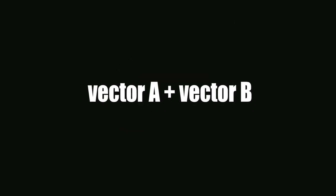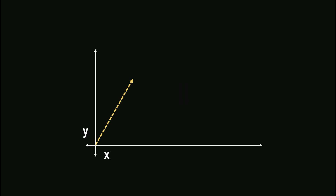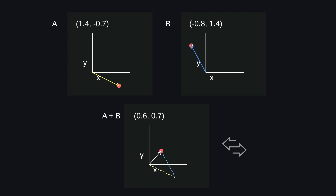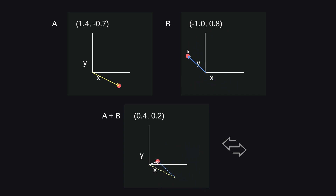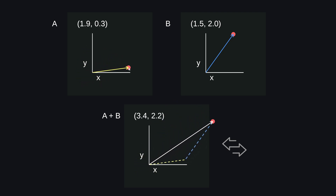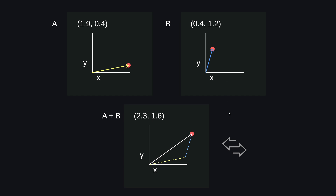Oftentimes in game dev, you'll see an operation that looks like this. What does it mean to add two vectors? Visually, this is easy to understand — vector A plus vector B is vector C. All you're doing is connecting lines. It's also easy to understand that when it comes to vectors, A plus B is the same as B plus A. As you can see, I can switch between the two, but the final endpoint of the result remains the same.